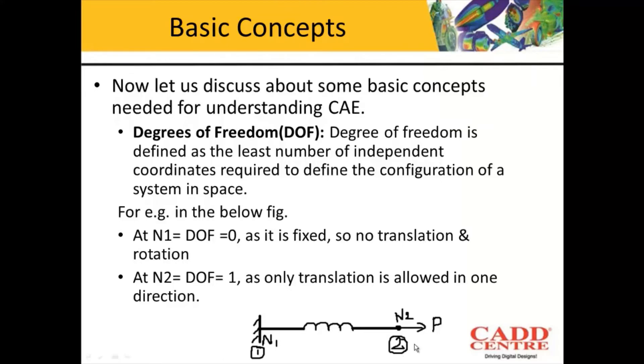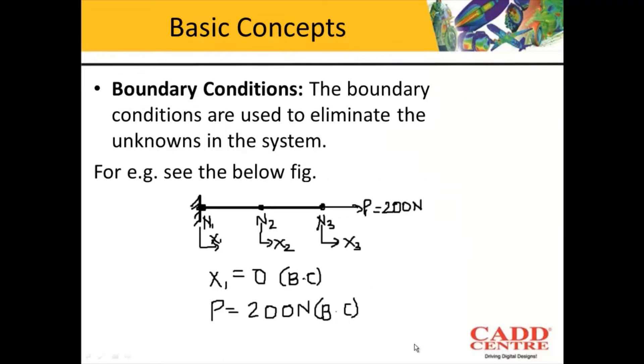Next is boundary conditions. The boundary conditions are used to eliminate the unknowns in the system. For example, see the below diagram.